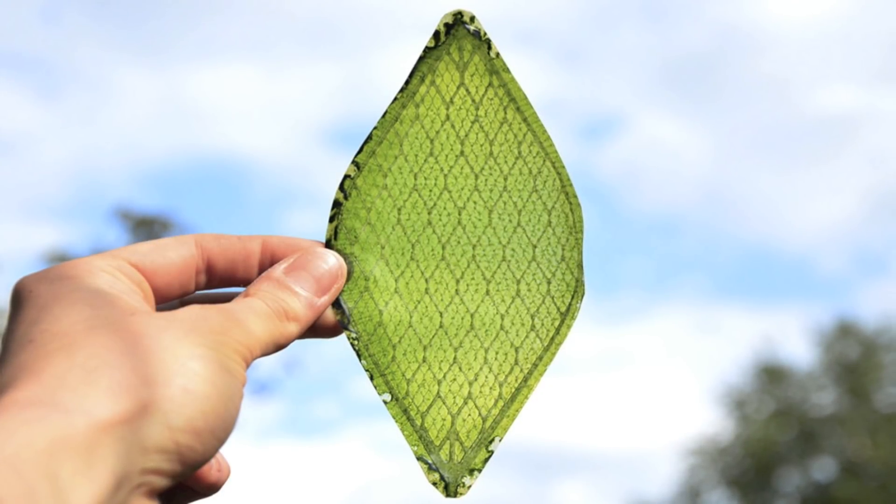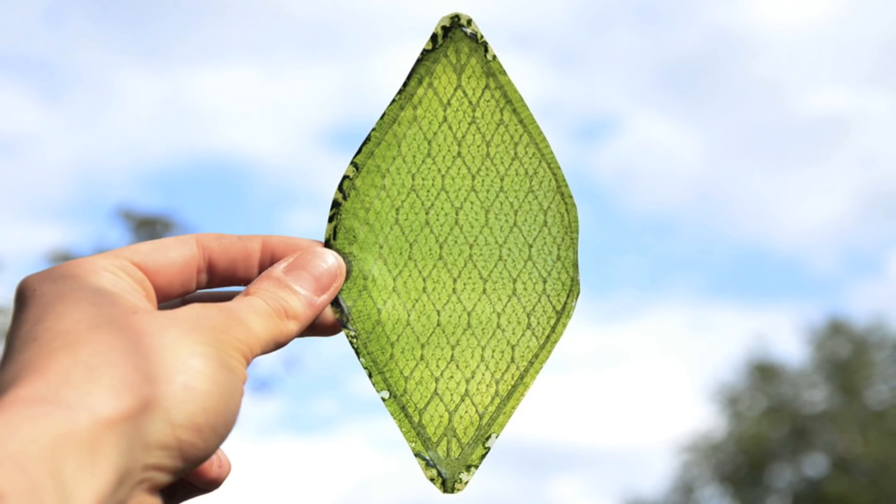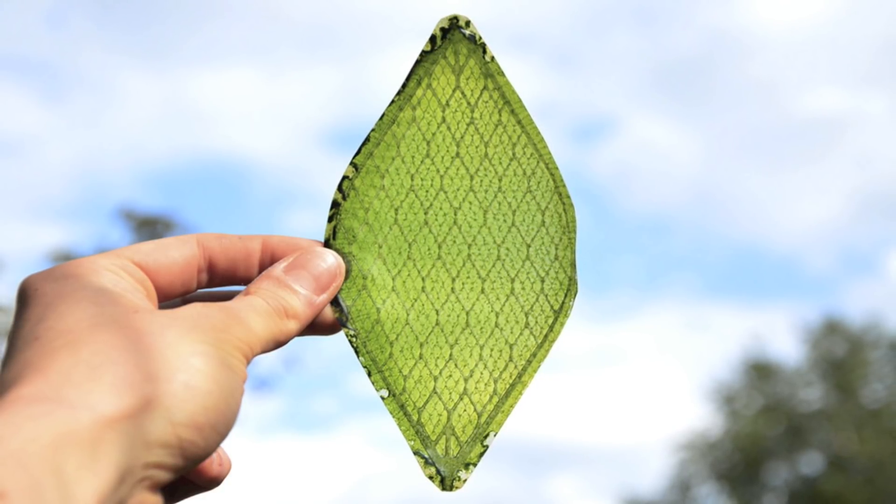A while back, a story was released of the first functioning artificial leaf, a material that encases chloroplasts into silk proteins to generate oxygen from water and light.